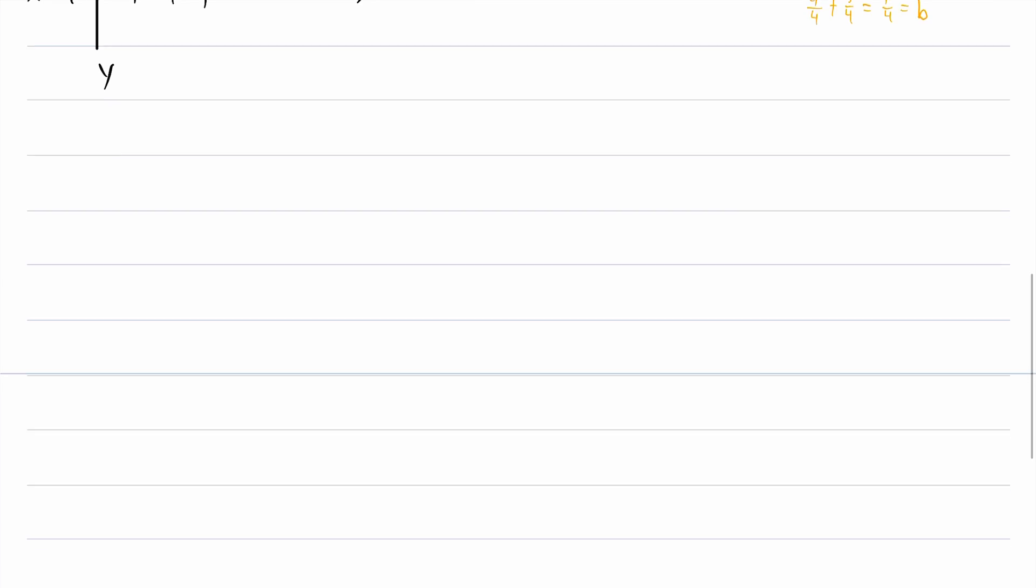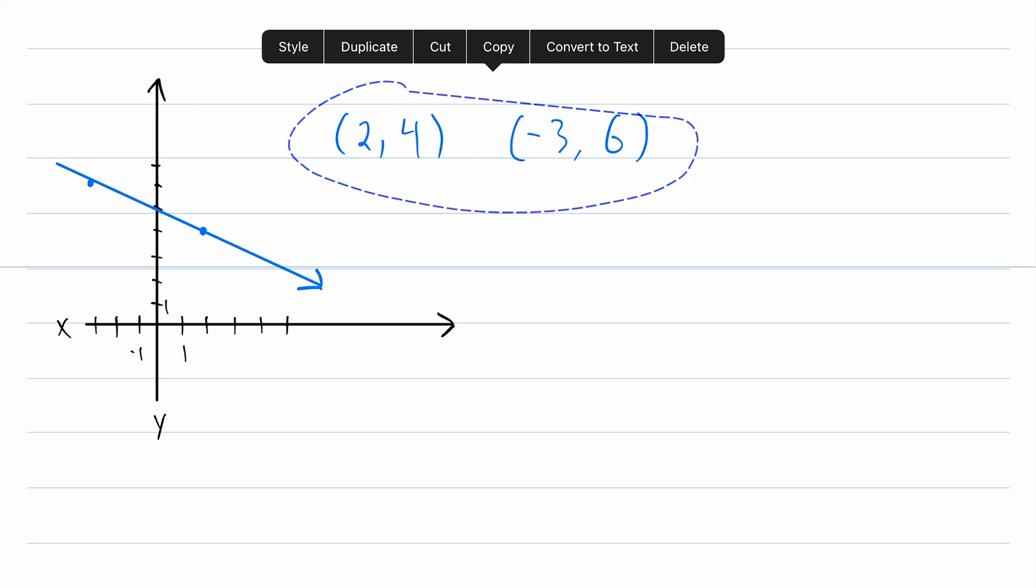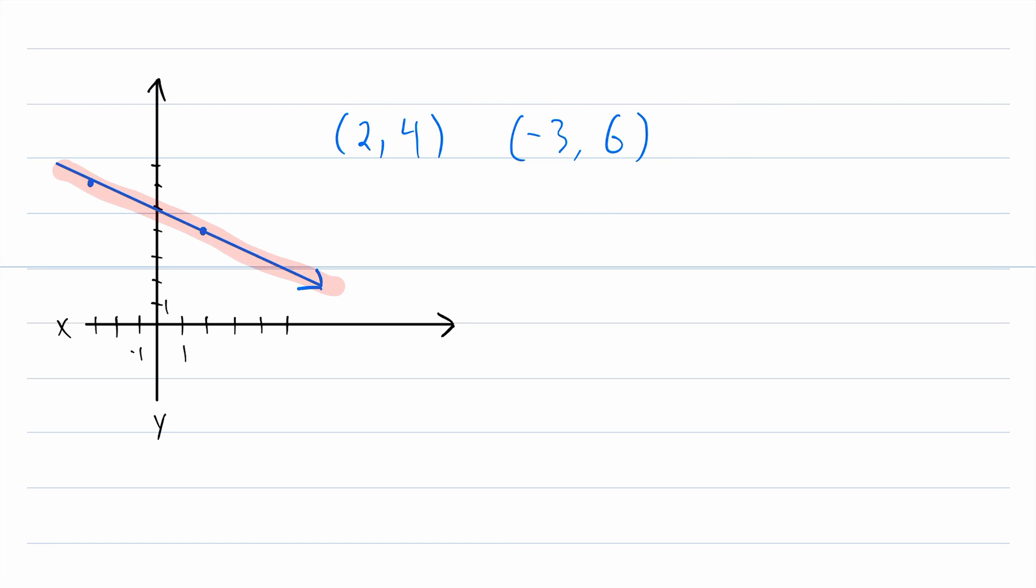Now let me give you an example to try on your own. Find the equation of this line that passes through these two points in point-slope form and in slope-intercept form. Let me know what you get down in the comments and I'll leave the solution in the description.